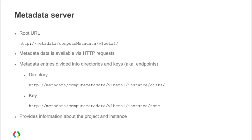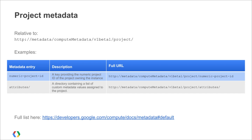Metadata entries provide information about both the project and the instance. All project metadata entries are relative to the path http://metadata/computeMetadata/v1beta1/project/. Examples include numeric-project-id, which is a key providing the numeric project ID of the project owning the instance, and attributes/, which is a directory containing a list of custom metadata values assigned to the project. To see a full list of project metadata entries, see the documentation.